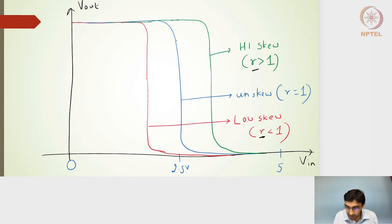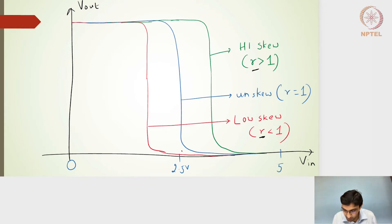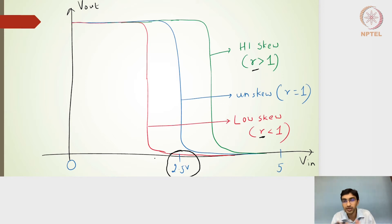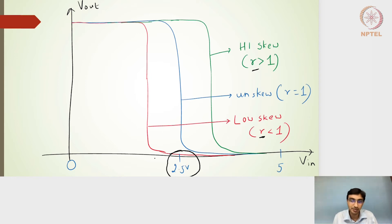Looking at this blue line, the unskewed inverter falls exactly on the input voltage of 2.5 volts — that is the threshold value of the inverter. We define something called the threshold voltage for an inverter, and remember that the threshold voltage of the inverter is not the same as the VT of the transistor.